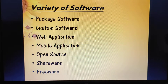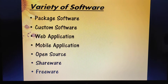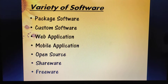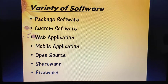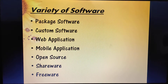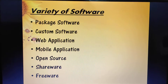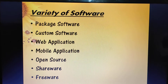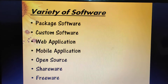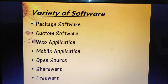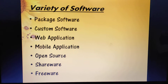Next is shareware — it is copyrighted software that is distributed free of cost for a trial period. That means you have to make payment to the program developer if you want to use the program after the trial period ends.